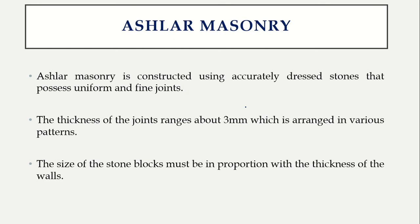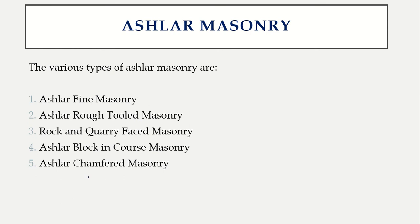Next is ashlar masonry. While rubble masonry uses partially, roughly, or completely undressed stones, ashlar masonry uses dressed stones — stones exactly cut into proper sizes and proper shapes. This type of construction using dressed stones possesses uniformity. The thickness of joints provided is around 3 mm, arranged in various patterns. The size of the stone blocks must be in proportion with the thickness of the wall.